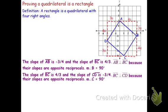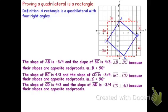To do this, turn our attention to the next angle. The segment CD has a slope of 4 thirds, and the slope of AD is negative 3 fourths. Those segments are perpendicular because again we have opposite reciprocal slopes. CD and AD form angle D, so the measure of angle D is 90 degrees, by the definition of perpendicular.